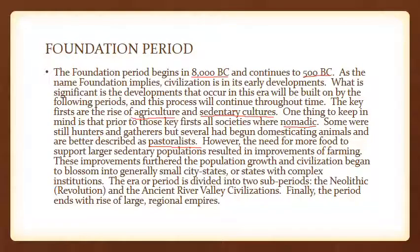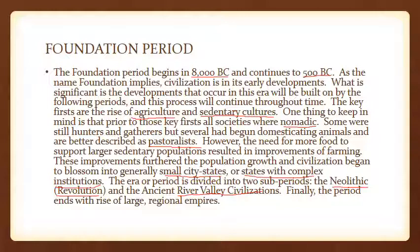The need for more food to support larger sedentary populations resulted in improvements of farming, which furthered population growth, and civilizations began to develop into city-states — evolving from small villages to city-states to states with complex institutions. This era is divided into two sub-periods: the Neolithic Revolution and the River Valley Civilizations. The period ends with a large rise in regional empires like Persia and Greece.